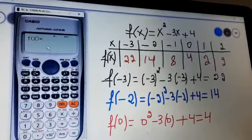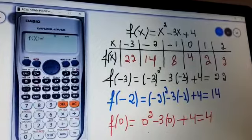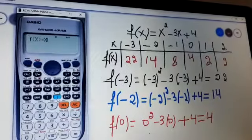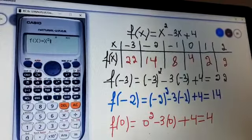F of x, as you see it, x² - 3x + 4. To introduce x, alpha x squared, minus 3, again x alpha x, plus 4.